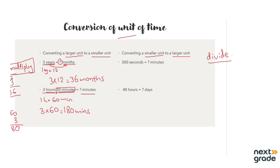Now we also have the additional 30 minutes. We add 30 minutes to 180 minutes. Rough work: 0 plus 0 is 0, 8 plus 3 is 11, carry 1, 1 plus 1 is 2 — so the answer is 210 minutes. That means 3 hours and 30 minutes equals 210 minutes.